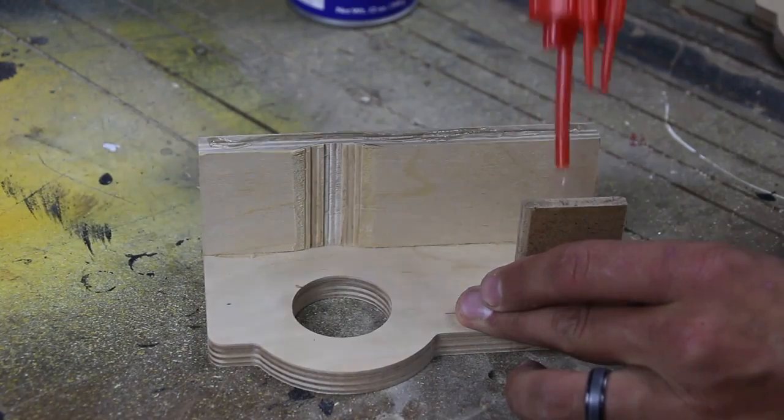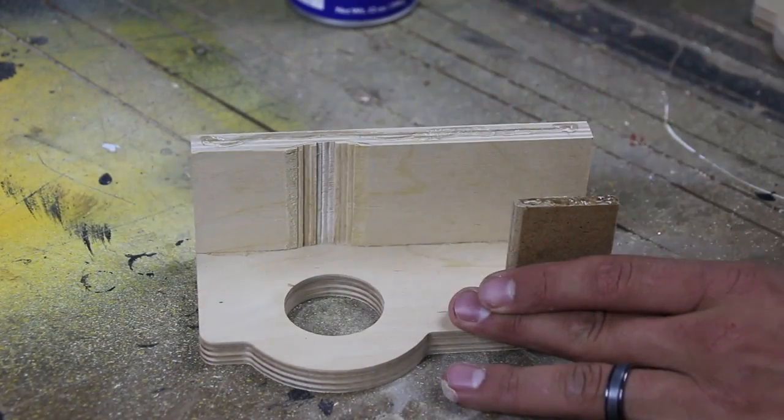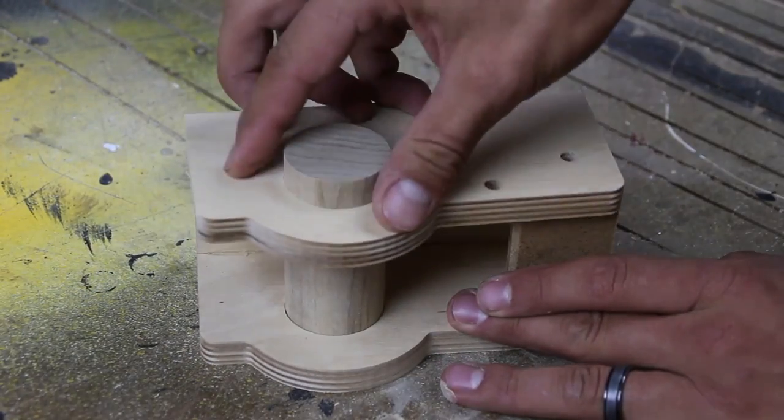I again used some CA glue to secure the other side. I make sure to place the dowel stock in the main hole to ensure they are lined up.